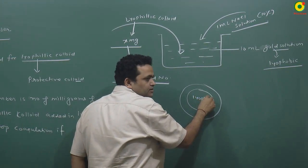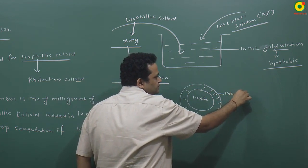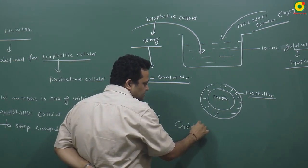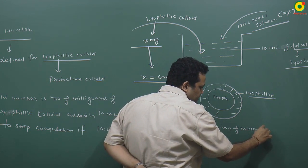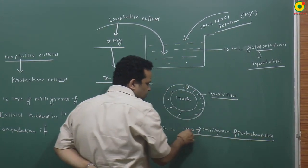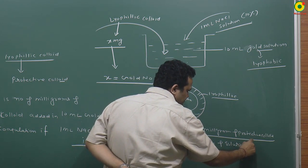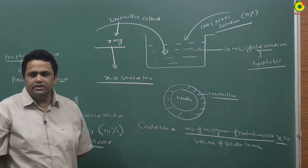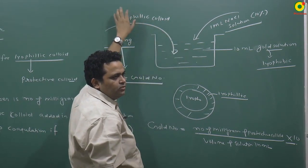यह particle लायोफिलिक है और यह layer लायोफिलिक ने तयार की है, तो इसी को हम Protective Colloid बोल रहे हैं। Goal Number का एक formula है — Goal Number is number of milligrams of protective colloid upon volume of solution in ml, multiplied by 10. 10 से इसलिए multiply किया क्योंकि 10 ml की हिसाब से definition है।